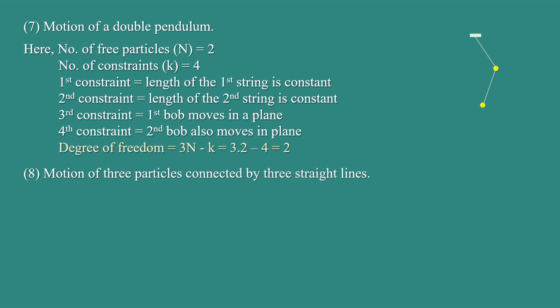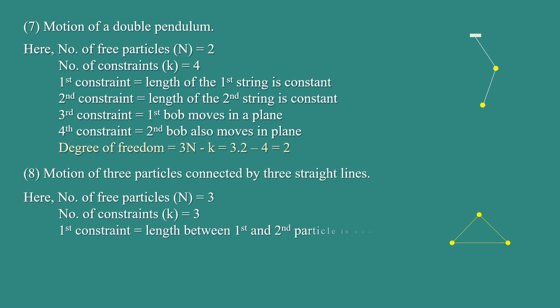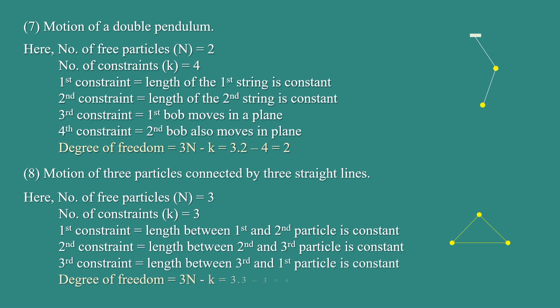Motion of three particles connected by three straight lines. Here, the number of particles N = 3 and the number of constraints K = 3. The first constraint is that the length between the first and second particle is constant, the second constraint is that the length between the second and third particle is constant, and the third constraint is that the length between the third and first particle is constant. Therefore, degree of freedom = 3N − K = 3(3) − 3 = 6.